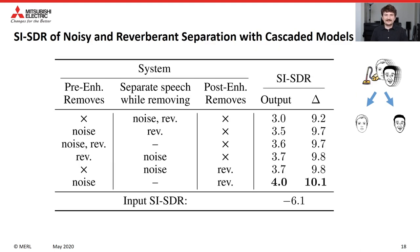Here are the results of the cascaded models on noisy and reverberant separation, with all configurations reported. Our ultimate result is that removing noise prior to separation and removing reverberation after separation is the best performing configuration, resulting in a gain of roughly 1 dB over the baseline where both noise and reverberation are removed as part of the separation itself.